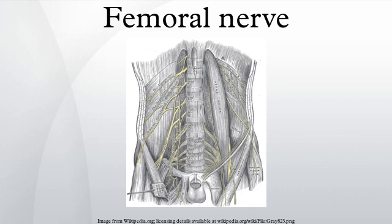It descends through the fibers of the psoas major muscle, emerging from the muscle at the lower part of its lateral border, and passes down between it and the iliacus muscle, behind the iliac fascia. It then runs beneath the inguinal ligament into the thigh, and splits into an anterior and a posterior division.